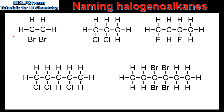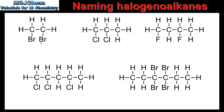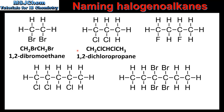The next compounds have multiple halogen atoms. In these examples the halogen atoms are the same, so we'll use the prefixes di, tri and tetra. Our first example has 2 carbon atoms with a bromine atom attached to each, so this compound is named 1,2-dibromoethane. Our next example has 3 carbon atoms in the longest chain with two carbon atoms bonded to chlorine atoms, so this compound is named 1,2-dichloropropane.